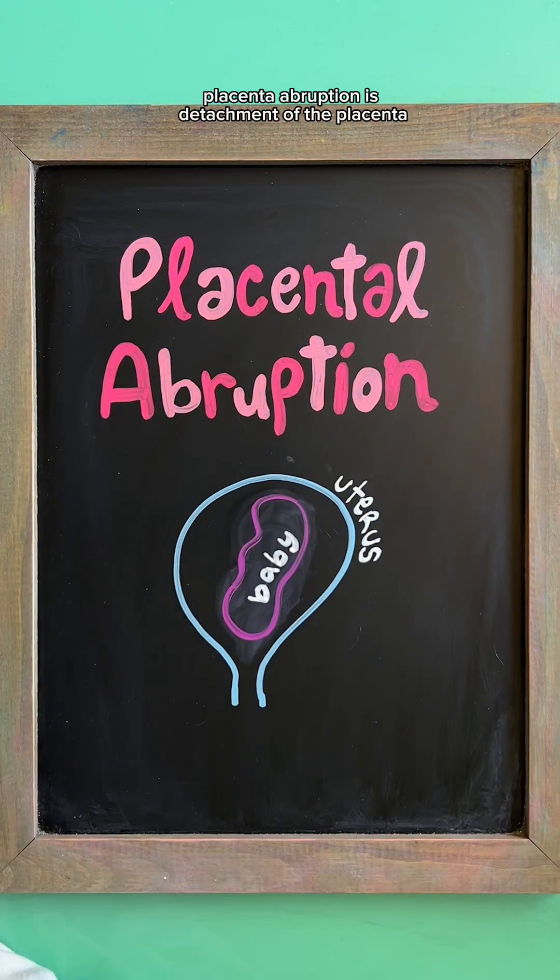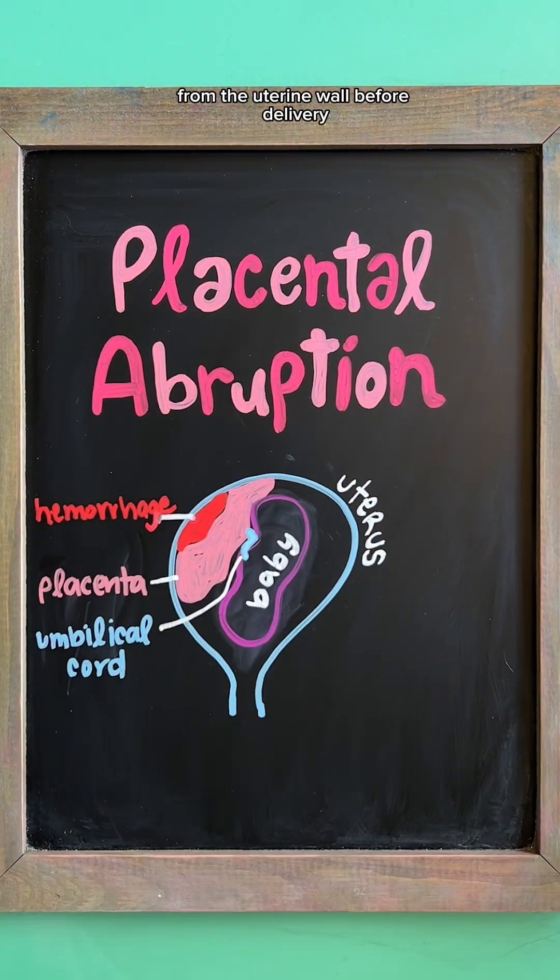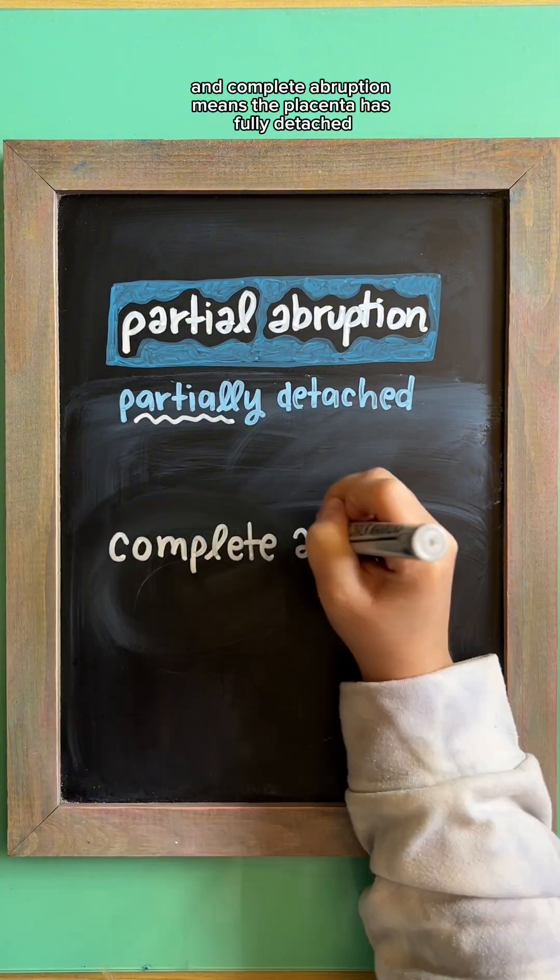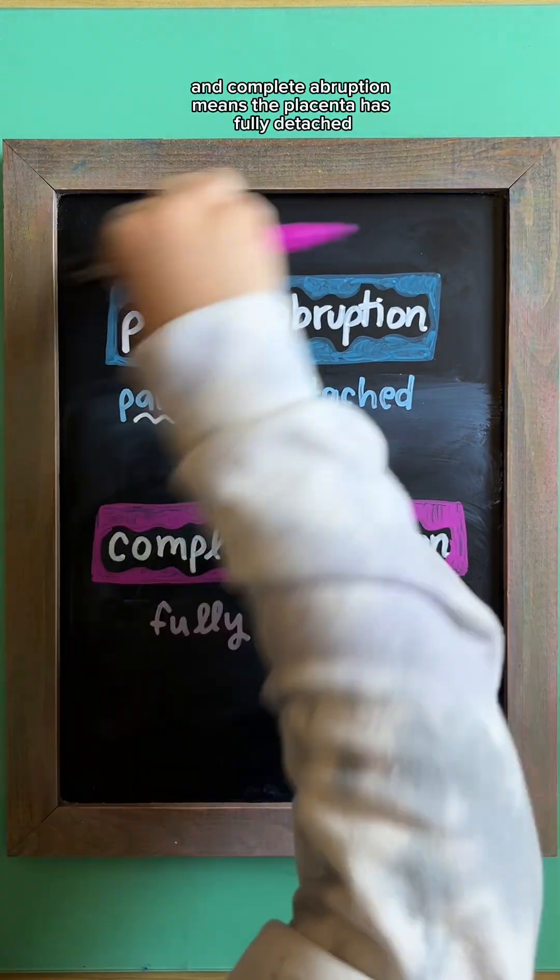Placental abruption is detachment of the placenta from the uterine wall before delivery. Partial abruption means the placenta partially detaches, and complete abruption means the placenta has fully detached.